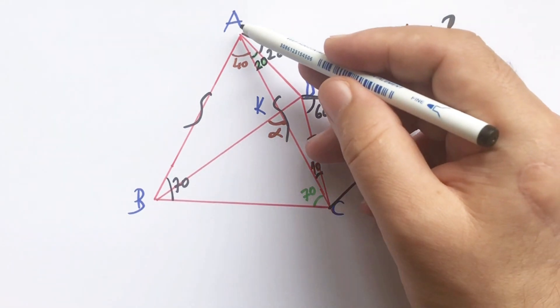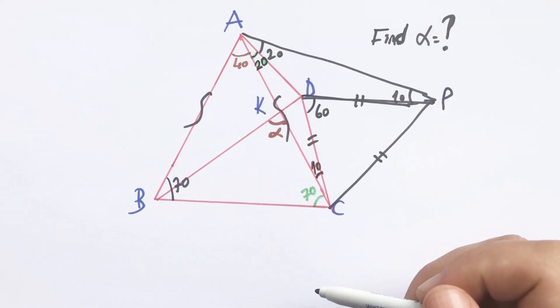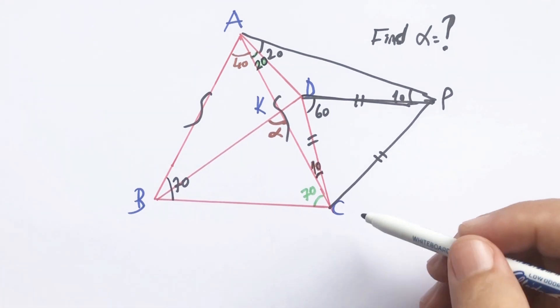So, the base angles of the equilateral triangle must be 60 degrees.